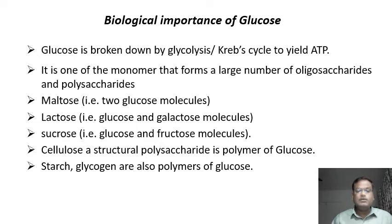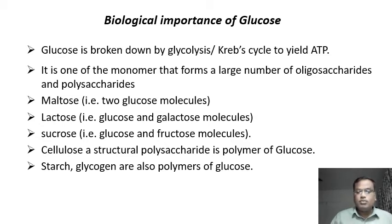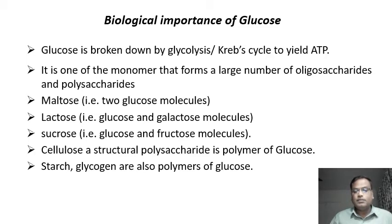For example, maltose is made up of two glucose molecules, lactose is made up of one glucose and one galactose, and sucrose is made up of one glucose and one fructose molecule. Polysaccharides like cellulose, starch, and glycogen are also made up of glucose molecules. Therefore, glucose as a monomer and as part of oligosaccharides and polysaccharides is very important in many metabolic activities.